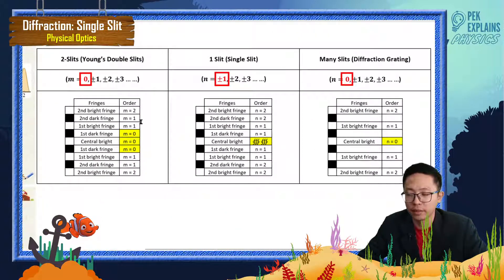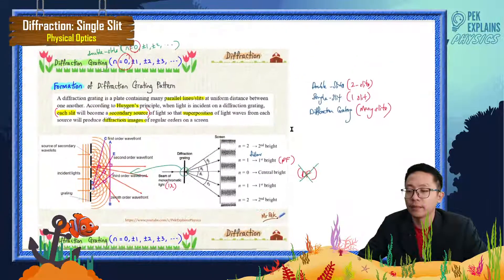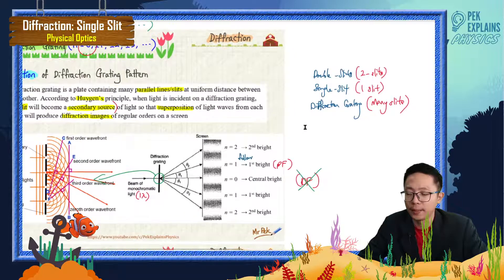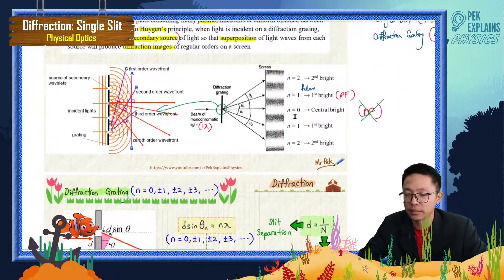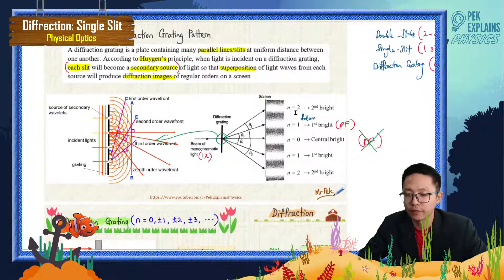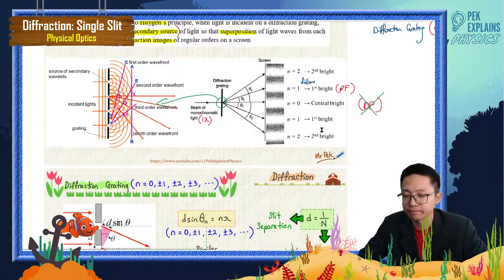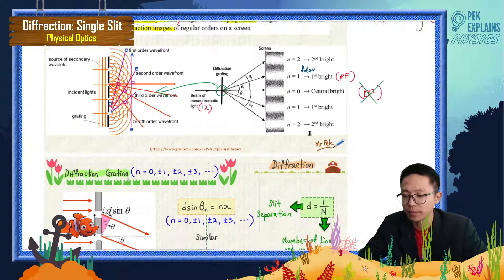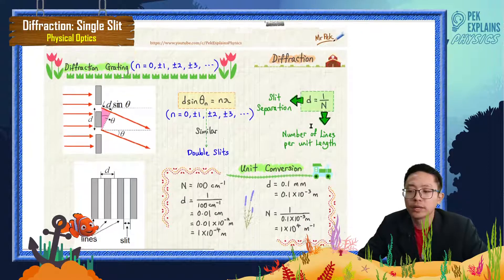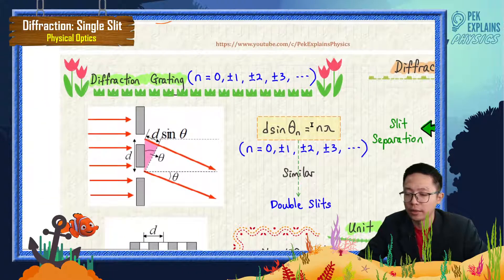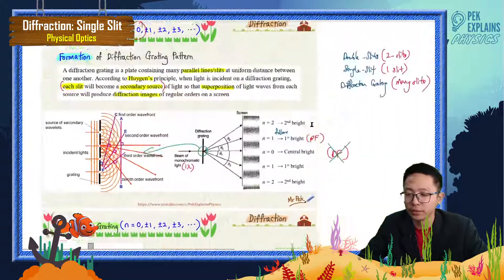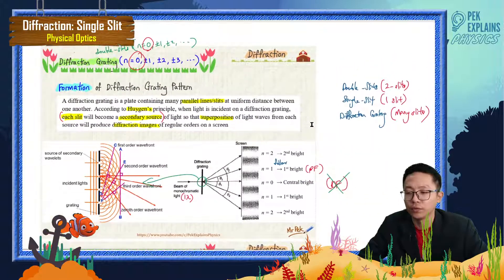I've already prepared a summary table and figure comparing double slit, single slit, and diffraction grating for easier understanding — I will explain about this later with the graph together. We don't have dark fringe, only bright fringe, and there is also a top and bottom part. Thank you for watching.